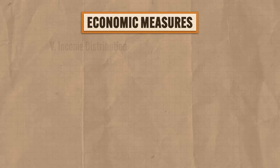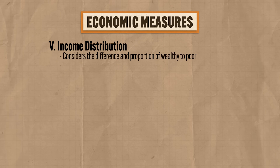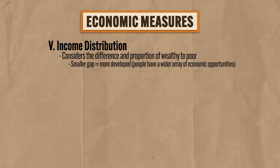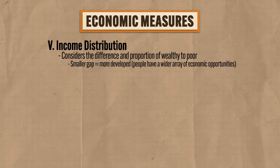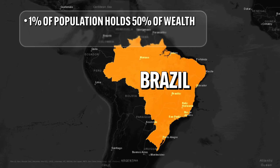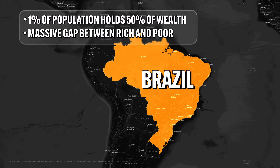There are still a few more measures of development. Fifth, we can look at income distribution to assess levels of development. This considers the difference in proportion of wealthy to poor citizens. Countries that have a smaller gap between those two groups are considered more developed because people there have a wider array of economic activities. Countries that have a wide gap between rich and poor tend to be less developed. For example, in Brazil, 1% of the population holds 50% of the wealth, which means there's a massive gap between the wealthy and the poor.